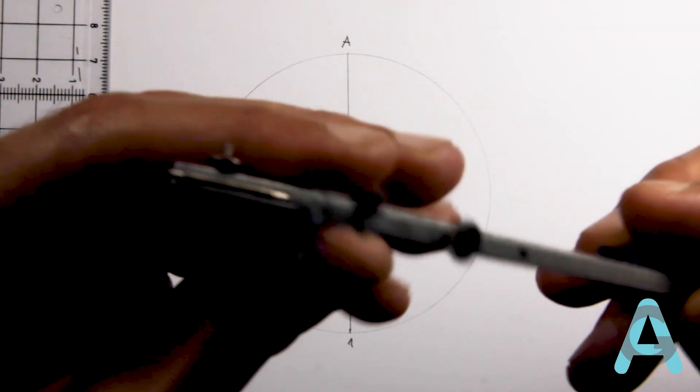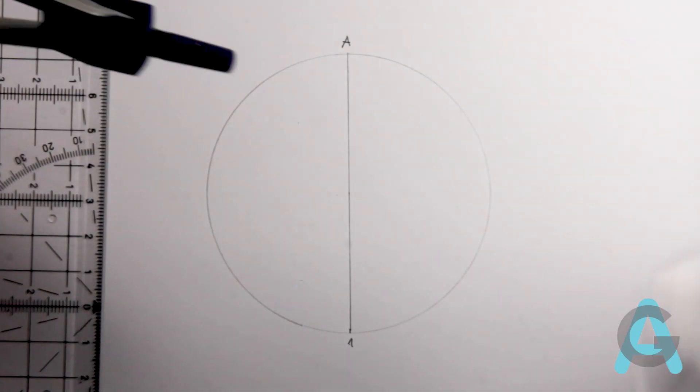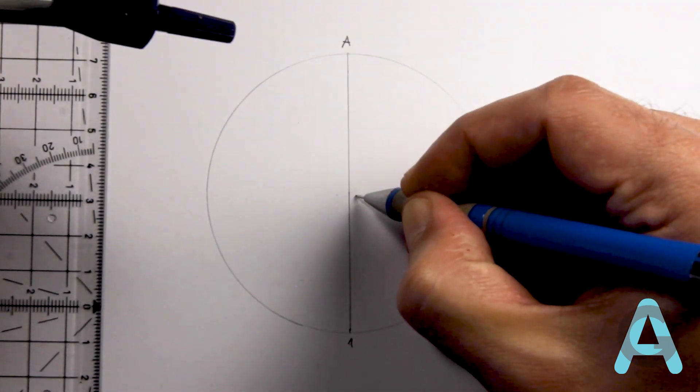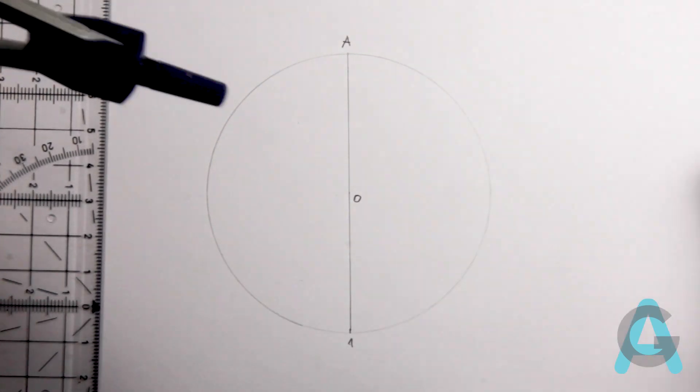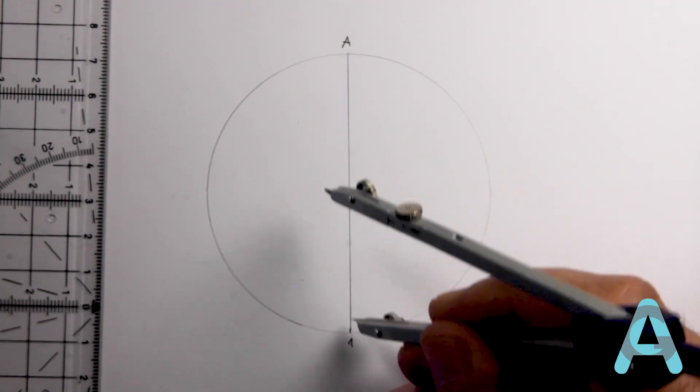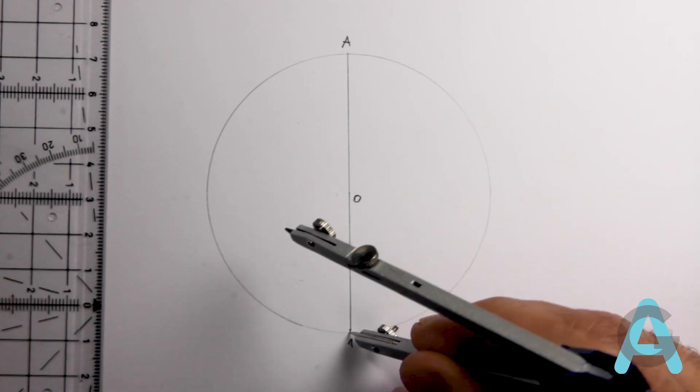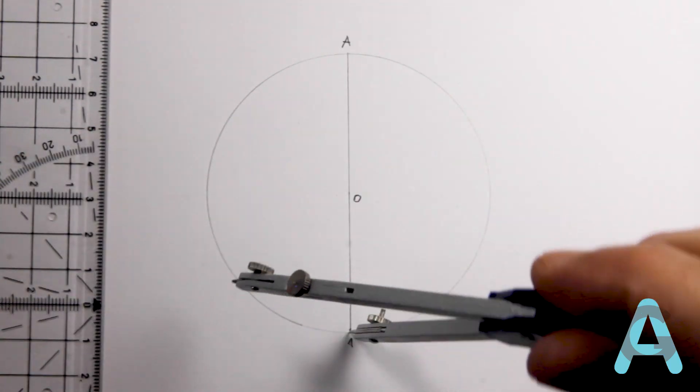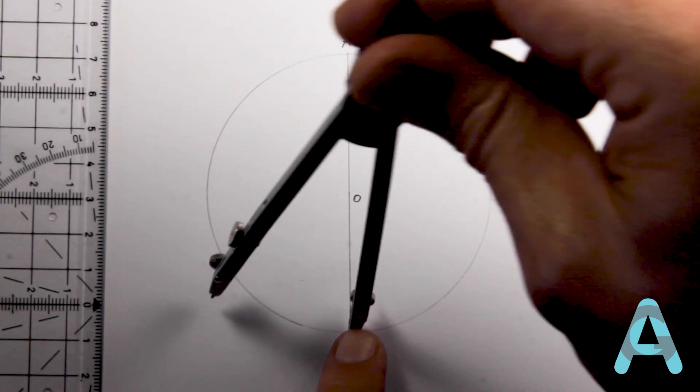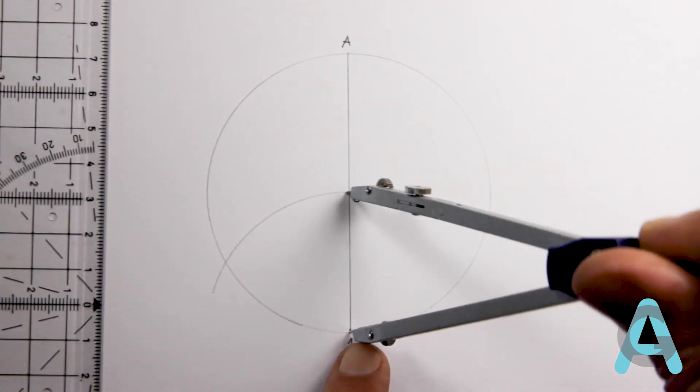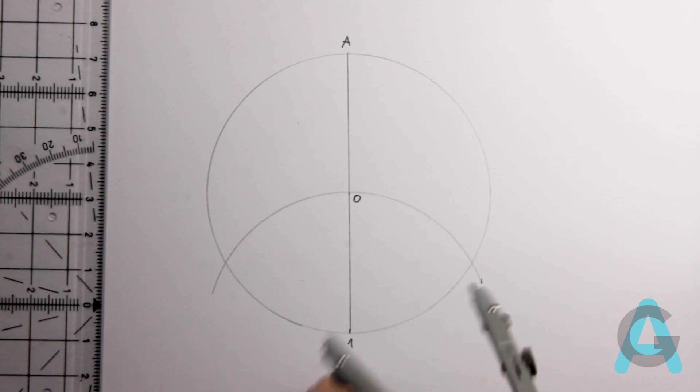Then put the needle of the compass in the number 1 point and open the compass until the center of the circle. Trace an arc in order to define the two remaining points of the equilateral triangle, point B and point C.